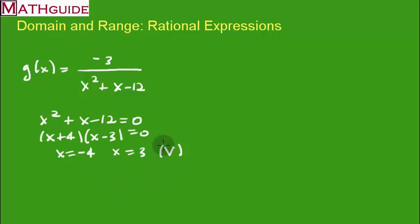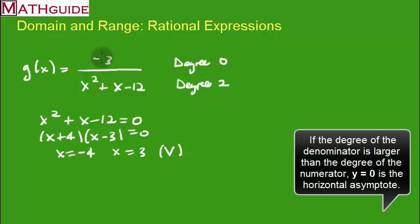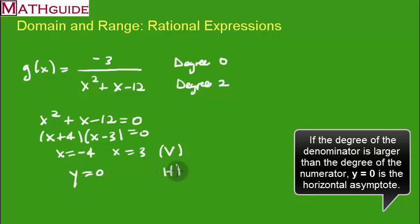To find the horizontal asymptote, we again compare degrees. The denominator has degree 2 and the numerator has degree 0. Since the denominator has a greater degree than the numerator, we get y equals 0 — same as our last example. That's our horizontal asymptote.